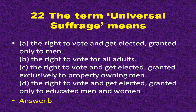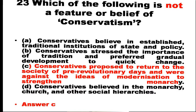Next question: Which of the following is not a feature or belief of Conservatism? Options are: conservatives believe in established traditional institutions of state and society; conservatives stressed the importance of tradition and preferred gradual development to quick change; conservatives proposed to return to the society of pre-revolutionary days and were against the ideas of modernization to strengthen monarchy; conservatives believed in the monarchy, church and other social hierarchies. The correct option is C.